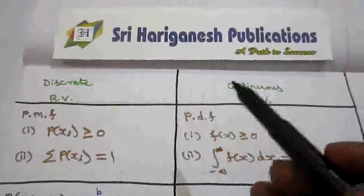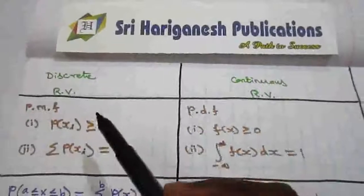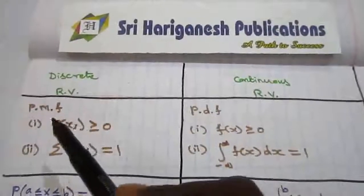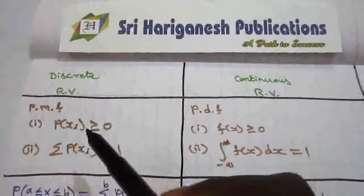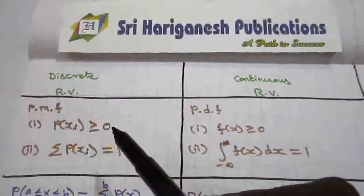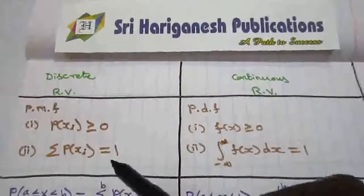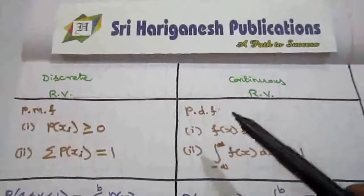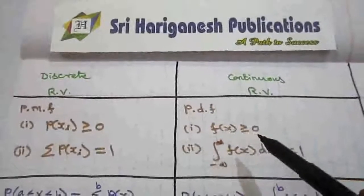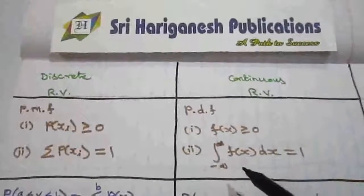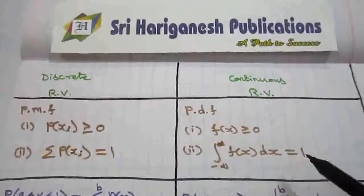Formulas for discrete and continuous random variables. For a discrete random variable, the probability mass function p(x_i) is always greater than or equal to zero, and the sum of all probabilities is equal to one. For a continuous random variable, the probability density function f(x) is always positive, and the integral from minus infinity to plus infinity of f(x) dx is equal to one.